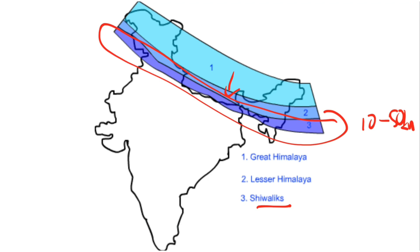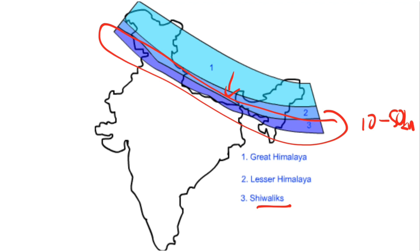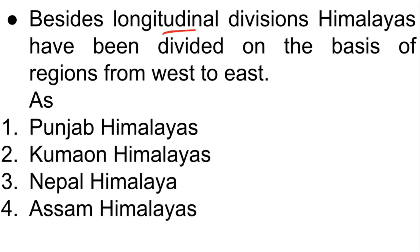The valleys of the Shivaliks are covered with thick gravel and alluvium. The longitudinal valleys lying between the Lesser Himalayas and the Shivaliks are known as duns. Dehradun, Kotli Dun, and Patli Dun are some of the well-known duns.